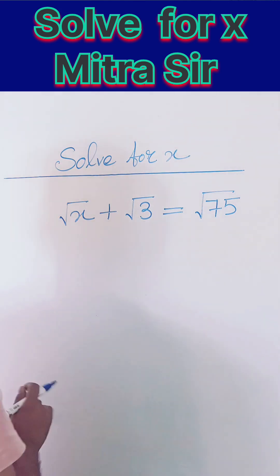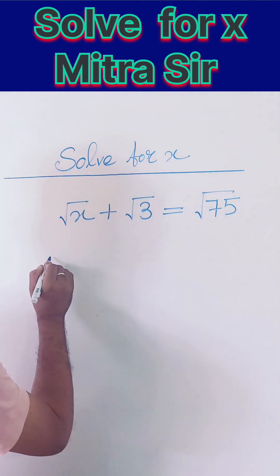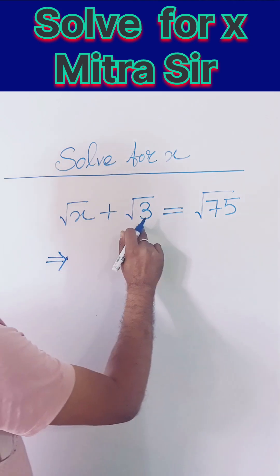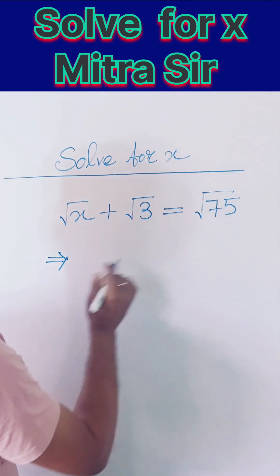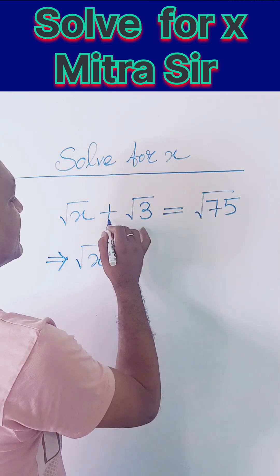So I'm going to solve it for the students. How will we find the value of x? We bring this √3 to the other side using transposition. I'll apply the transposition property.